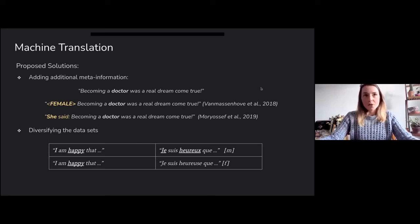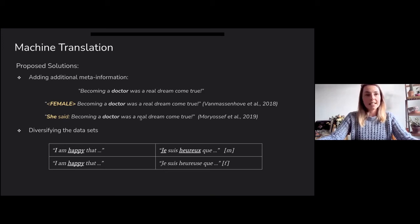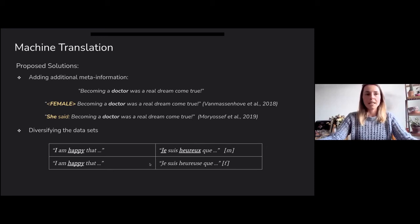These two methods offer some control, but aside from that there have been other solutions proposed, like diversifying the data sets. This can be done by duplicating sentences — it's called counterfactual data augmentation — where if you have a sentence in the male form, you create an equivalent in the female form. However, this doesn't really offer any control with respect to the actual translations.